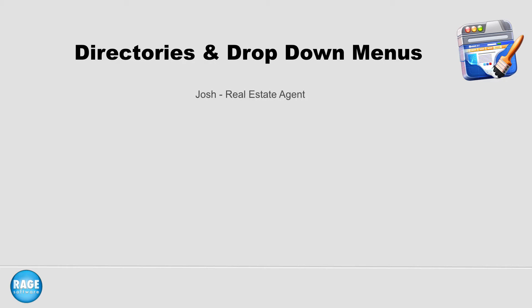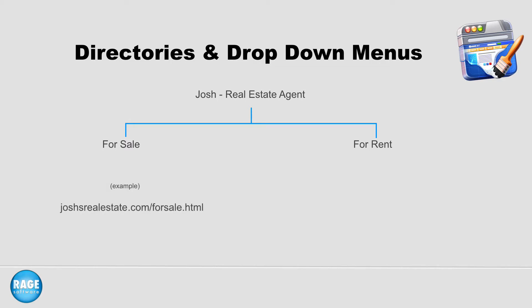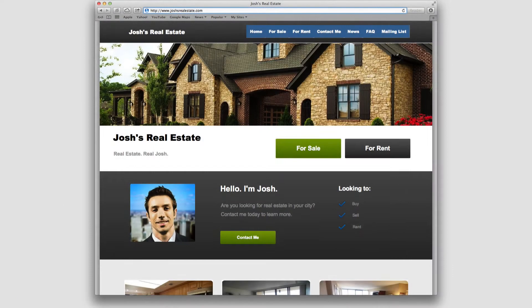Assume Josh is a real estate agent and has houses for sale and for rent. Josh might have two URLs for his website for each of these products he offers. One might be joshsrealestate.com/for-sale.html and joshsrealestate.com/for-rent.html. His navigation menu on his website might look something like this.